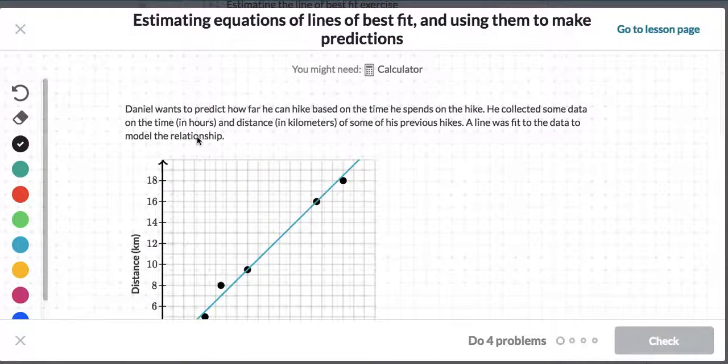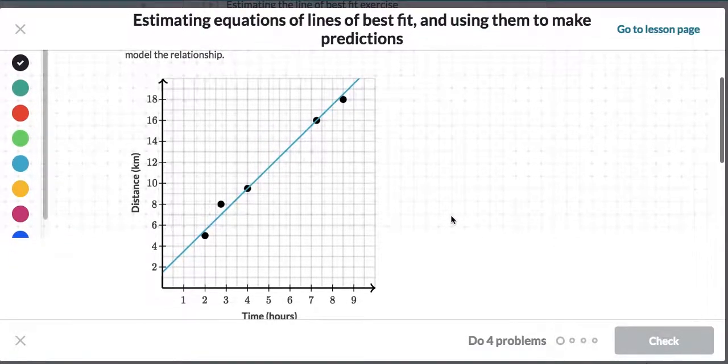And we're going to make some predictions on it. So let's take a look at the question. Daniel wants to predict how far he can hike based on the time he spends on the hike. He collected some data on the time in hours and distance in kilometers of some of his previous hikes. A line was fit to the data to model the relationship, and here we have it here.